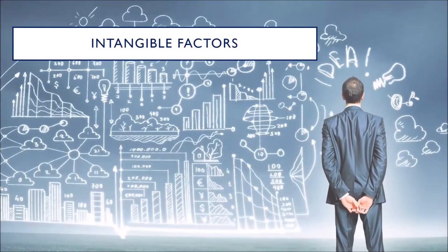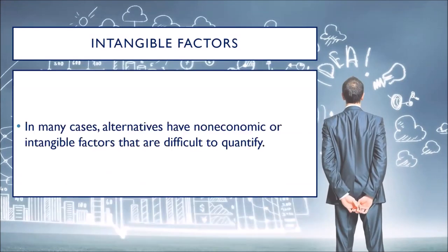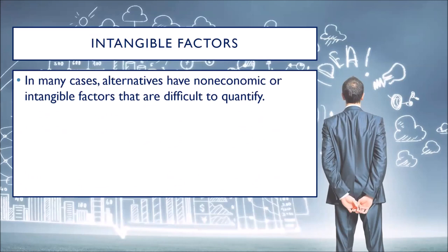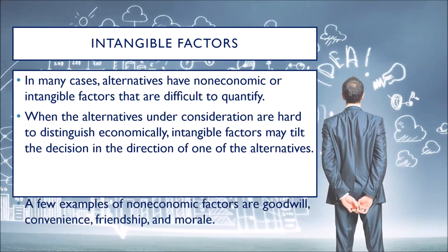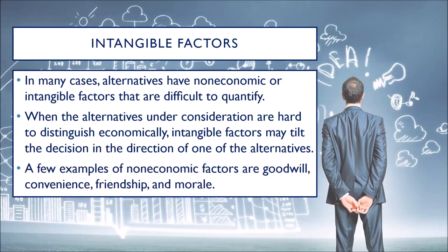Intangible factors: in many cases, alternatives have non-economic or intangible factors that are difficult to quantify. When the alternatives under consideration are hard to distinguish economically, intangible factors may tilt the decision in the direction of one of the alternatives. A few examples of non-economic factors are goodwill, convenience, friendship, and morale.